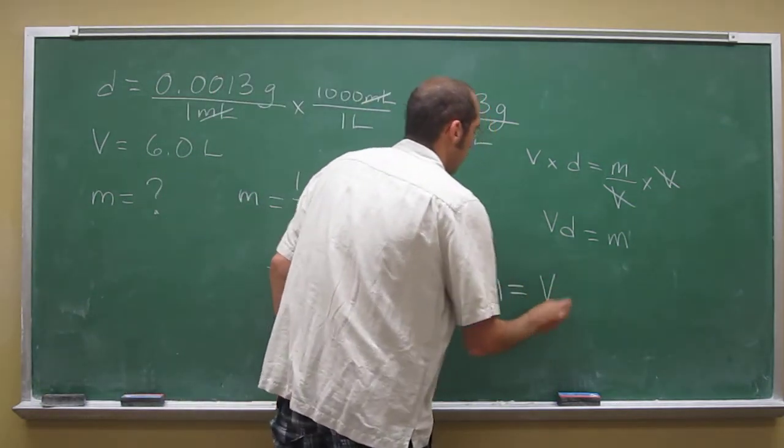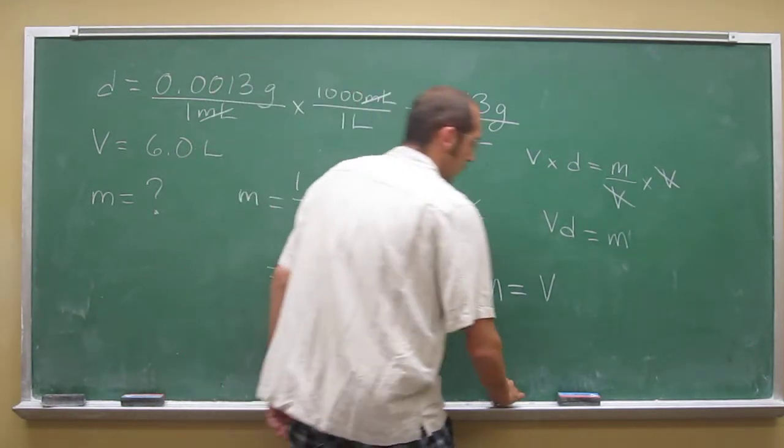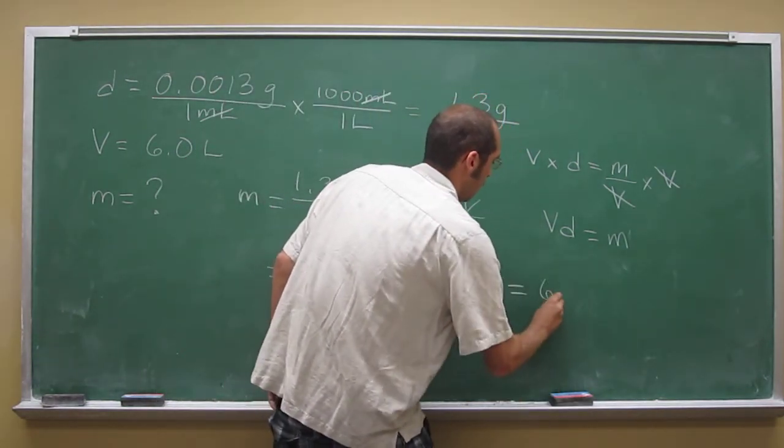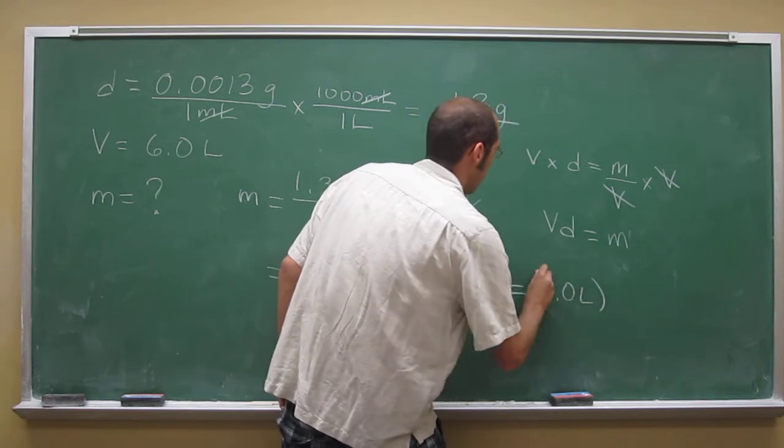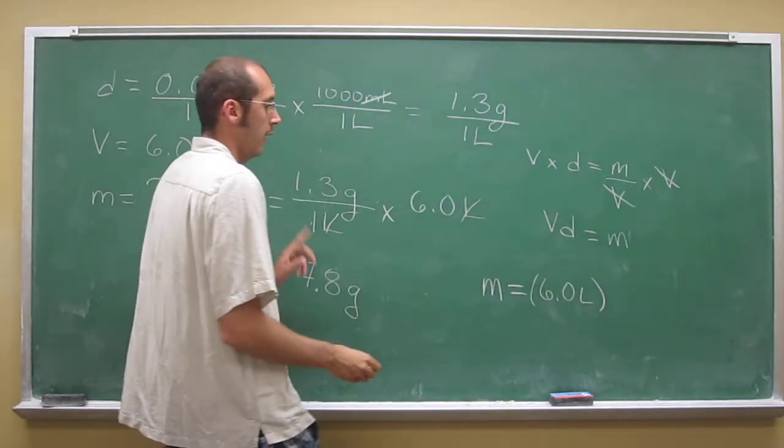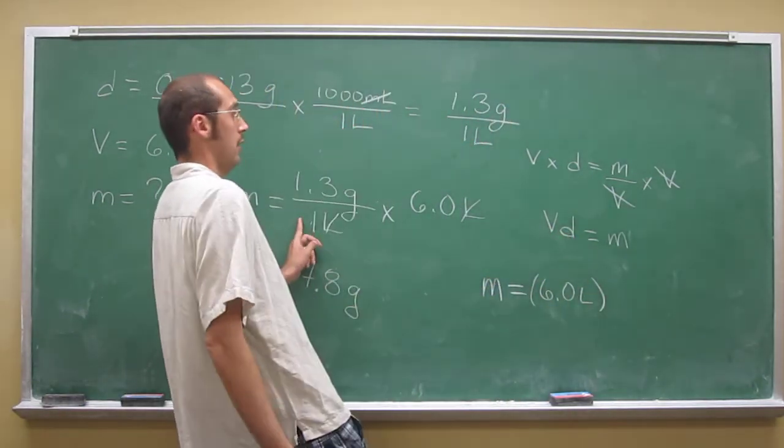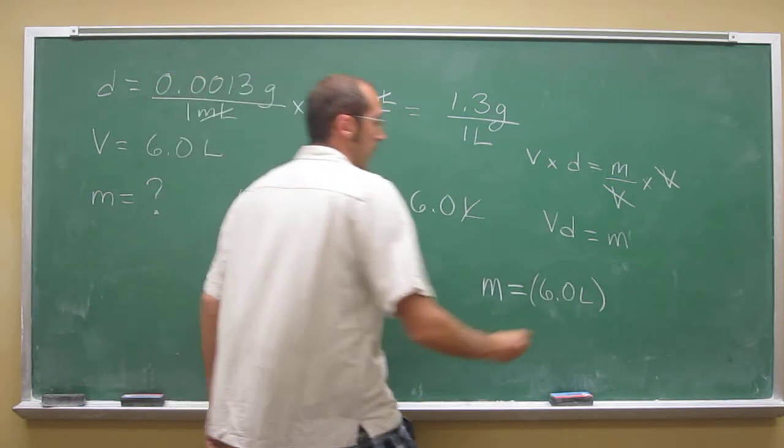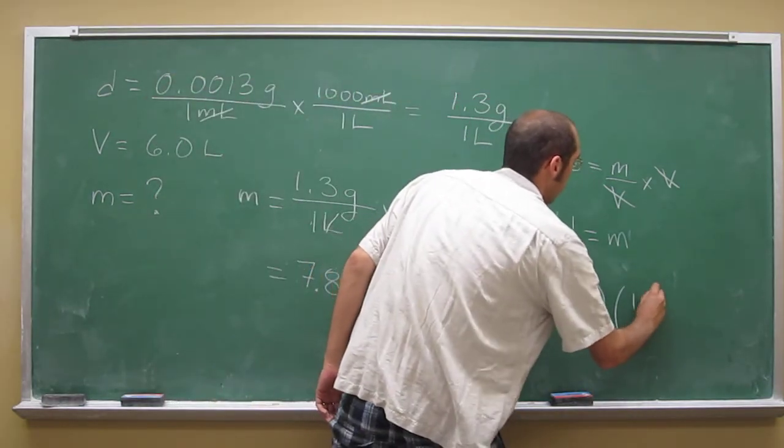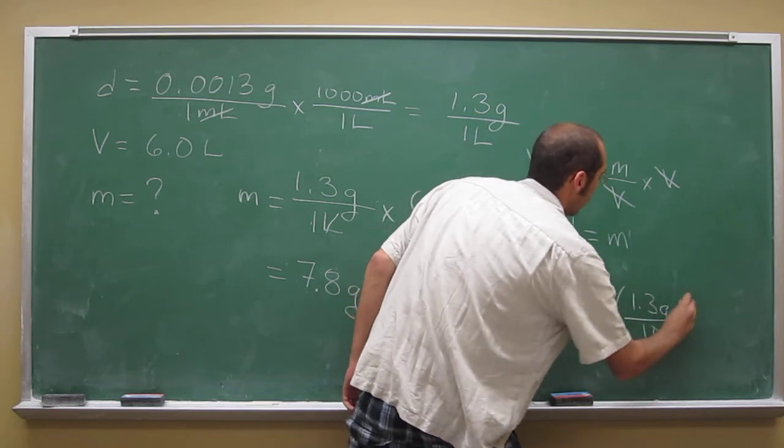M equals the volume, which is six liters, multiplied by D, which is the density, right? Which is what we calculated too. 1.3 gram per one liter.